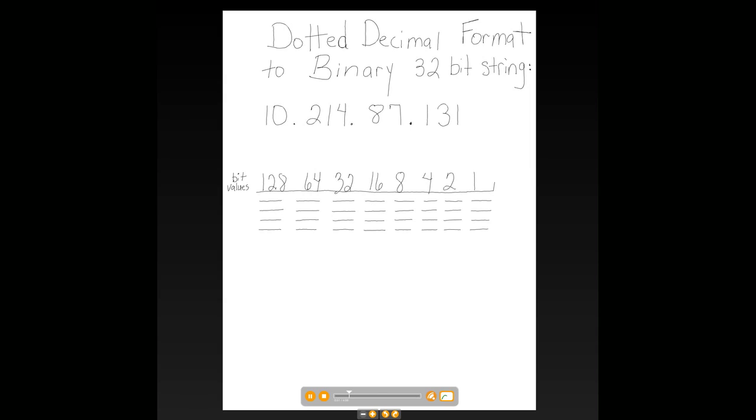Our first dotted decimal format number is 10. So to find out which bits turned on will add up to 10, we're simply going to start subtracting them out. The first bit is worth a value of 128. We're only looking for a value of total of 10, so that bit is turned off. 64, still too large. That bit has to be turned off.